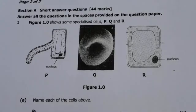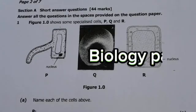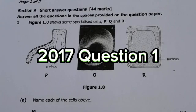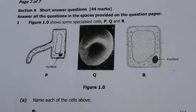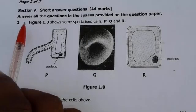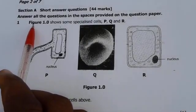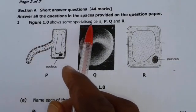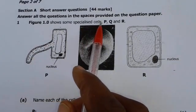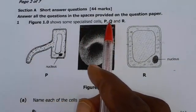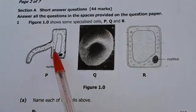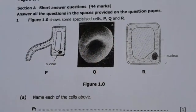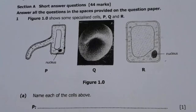In this video, we are going to look at Biology Paper 2 for the year 2017, Question 1. The information says Figure 1.0 shows some specialized cells P, Q, and R.